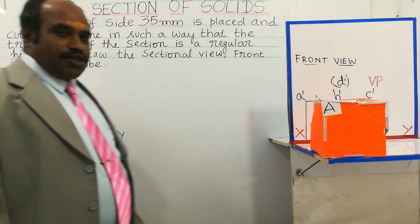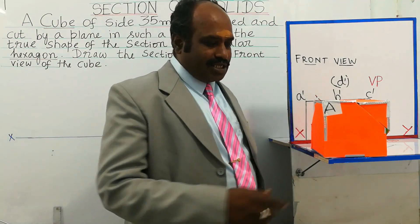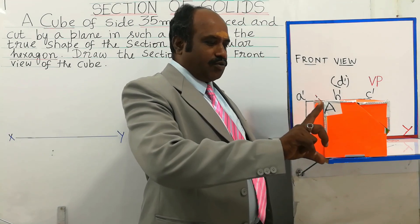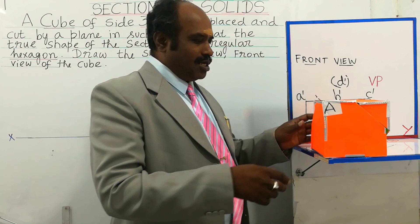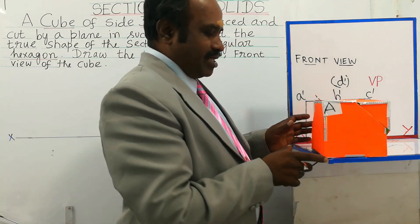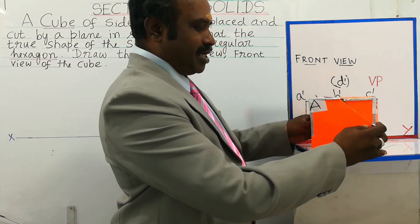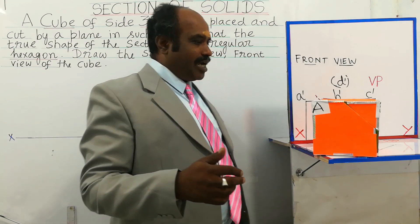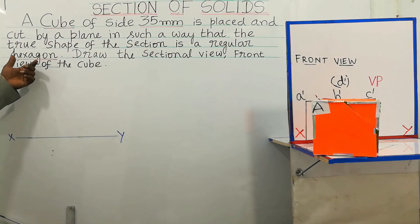So what is a cube? Basically a cube will have all the sides equal. This is the length of the cube, this is breadth of the cube, and this is height of the cube. If all the sides are equal, then the particular solid is called a cube. So height is equal to the length and breadth. This topic is section of solids. I am going to cut the solid in such a way that we are going to get a hexagon in the true shape.